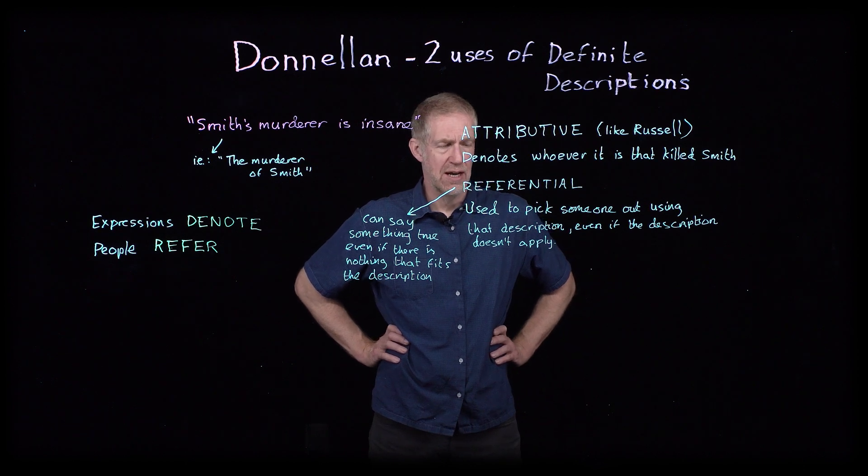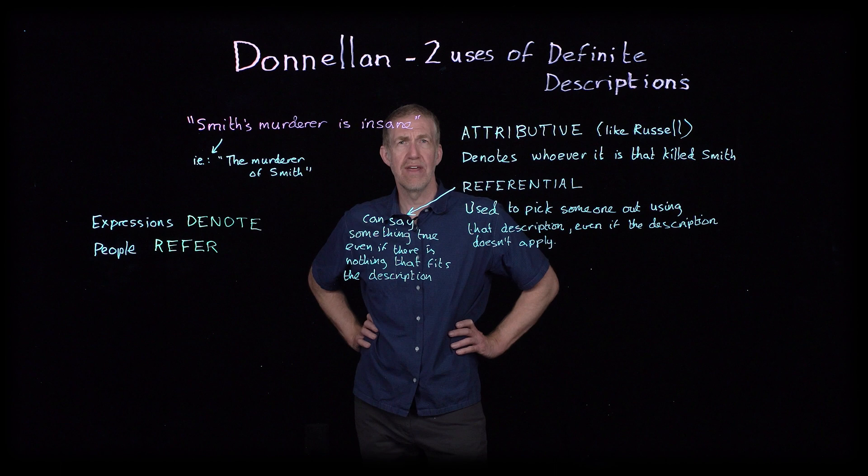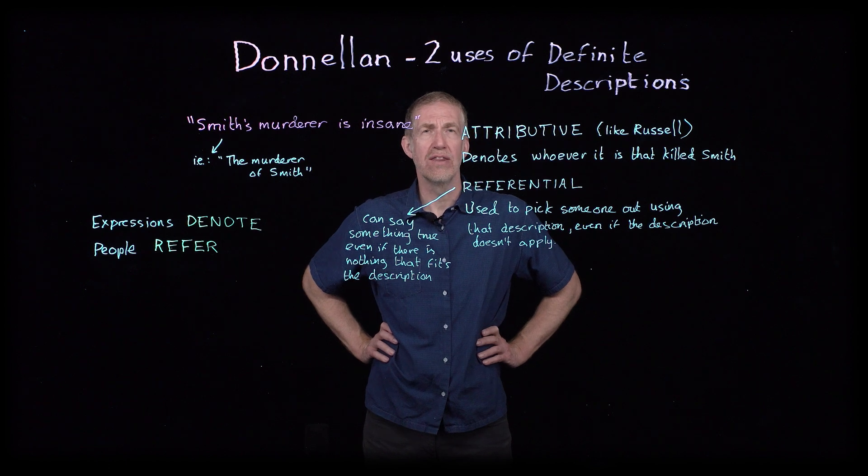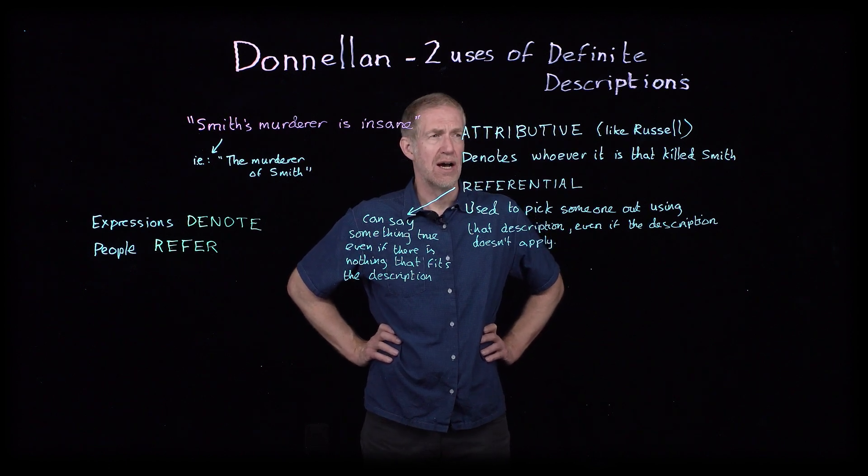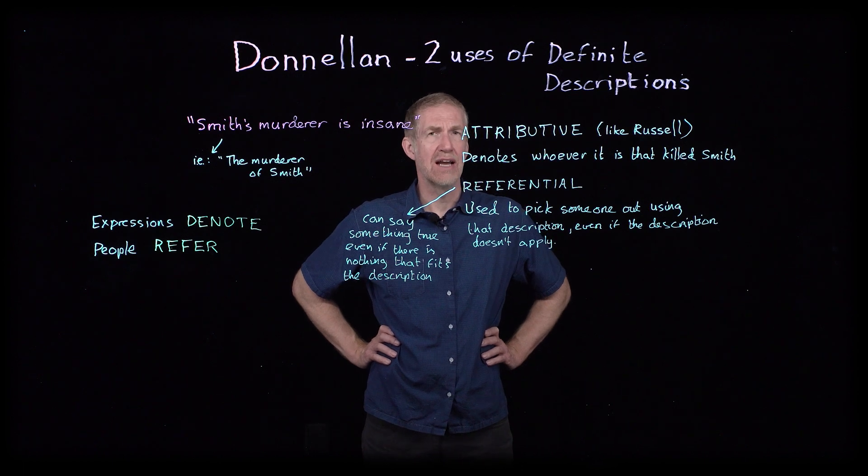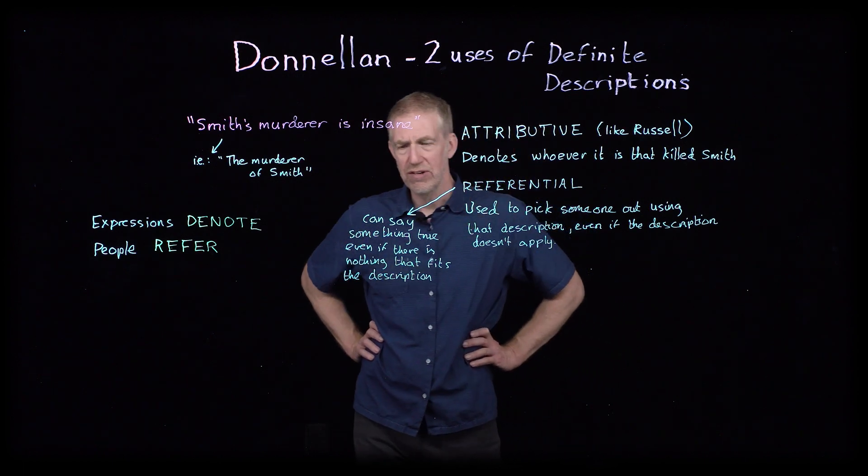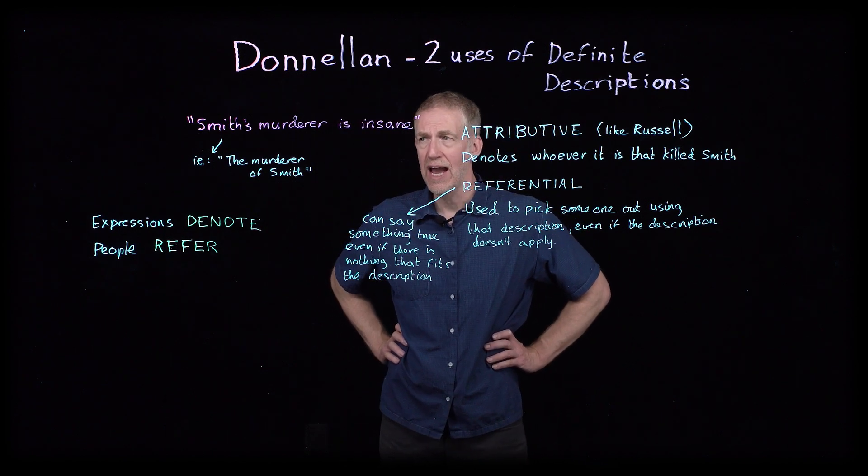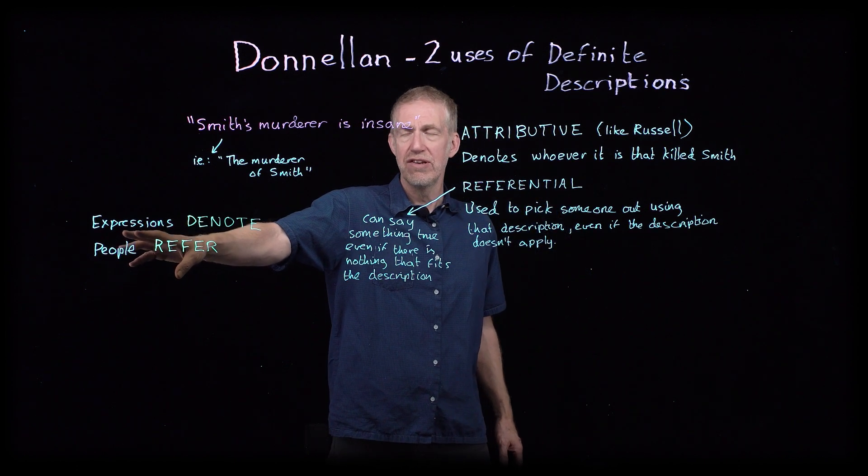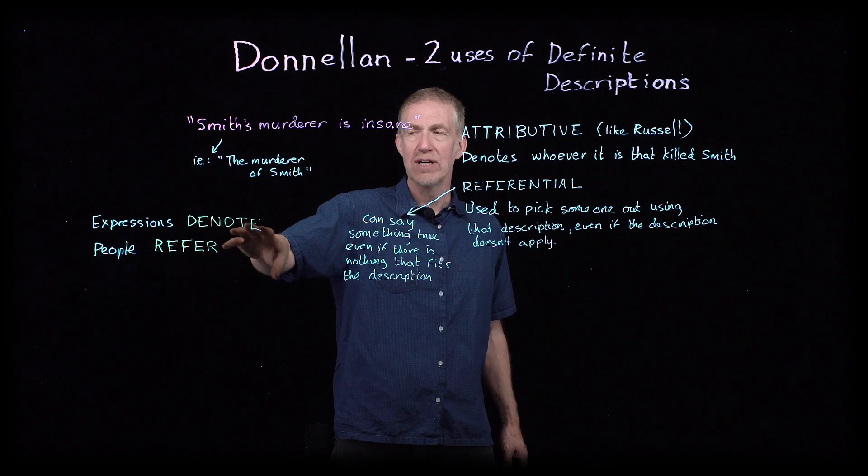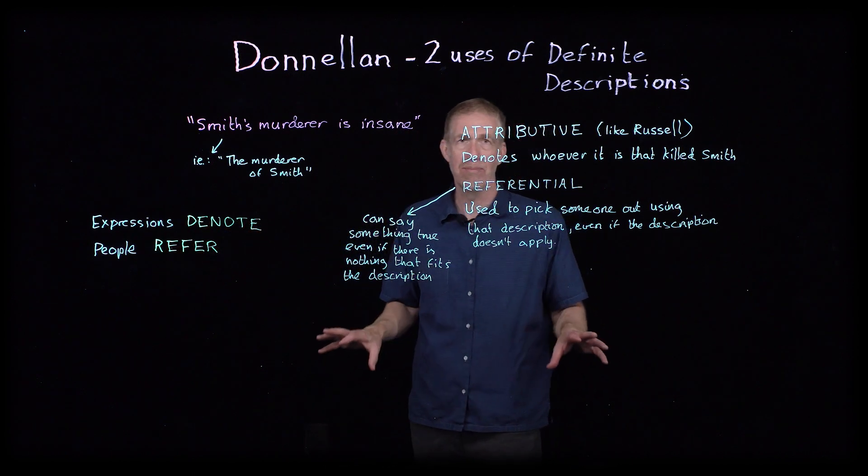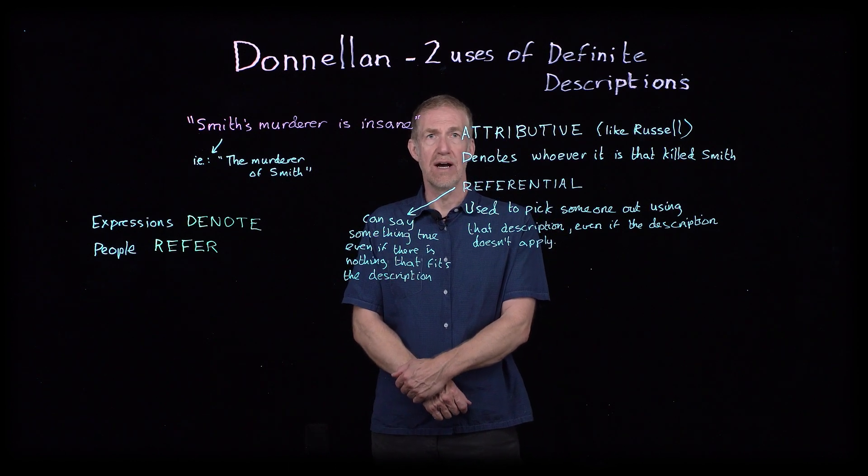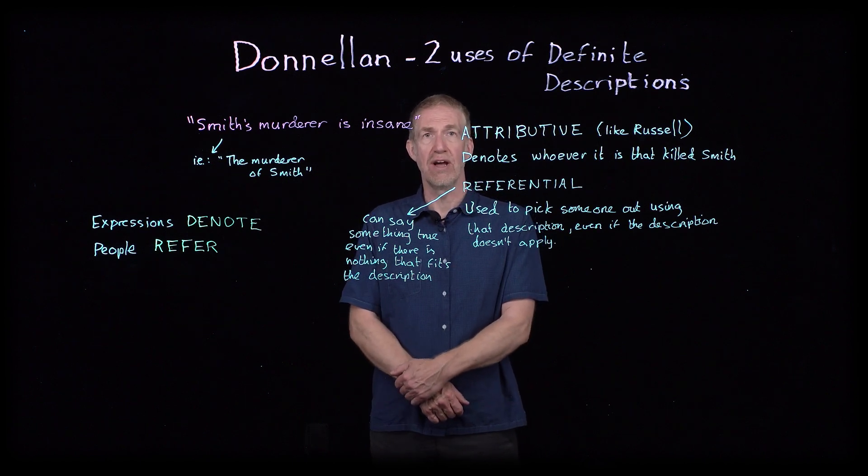But essentially, Strawson's position is that we should focus more on the speakers of language and less on the language itself. So Russell focuses on how language itself picks out things in the world. And when we look at language itself, statements in language can denote in that they can pick something out in the world. They can be about that thing in the world. That's what language can do. And Russell, of course, says On Denoting, that's what he's talking about.